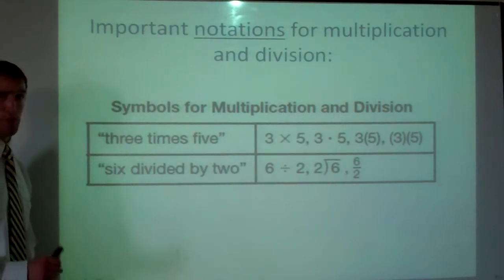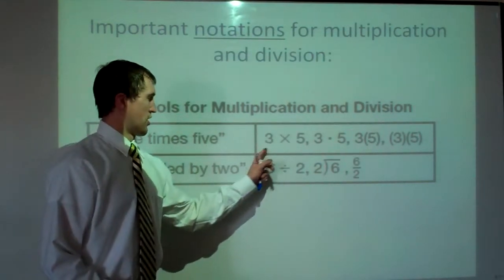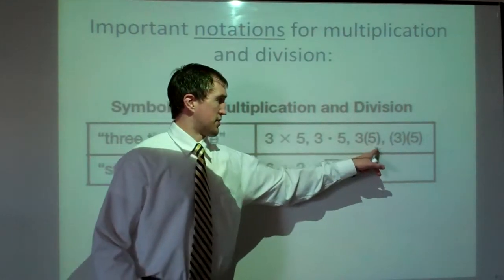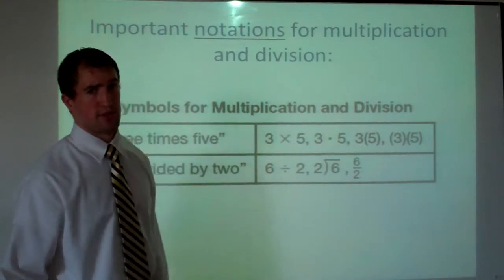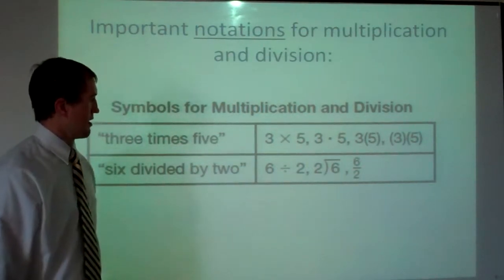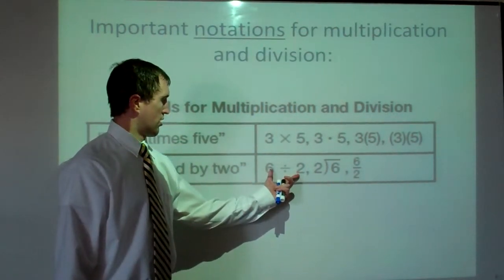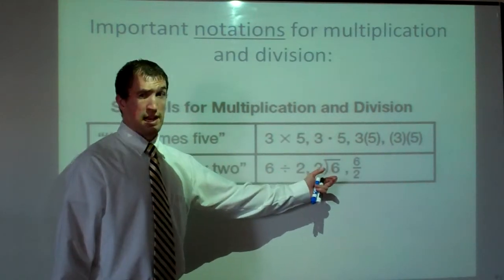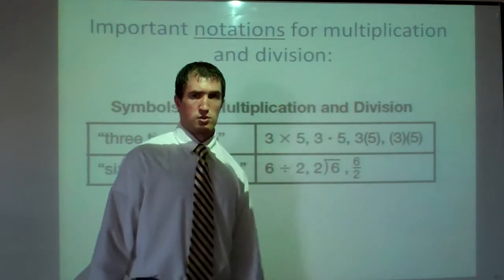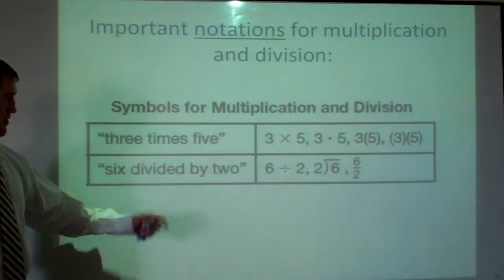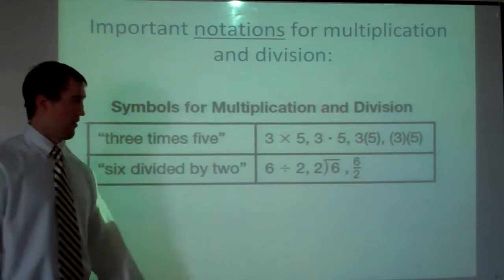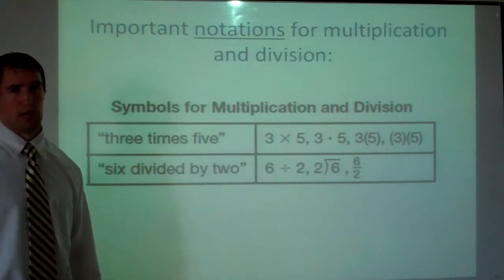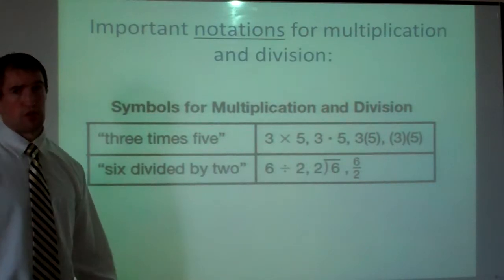Just a couple of notations that are important for multiplying and dividing: a regular times sign like three times five, a dot also means times, and parentheses when numbers are next to each other also mean multiply. For division, there's the long division symbol, a fraction like six over two, or six divided by two. I like using the fraction — it's easier and more algebraic, so that's what I try to stick to.